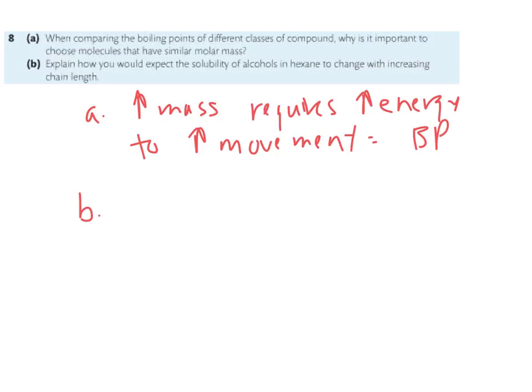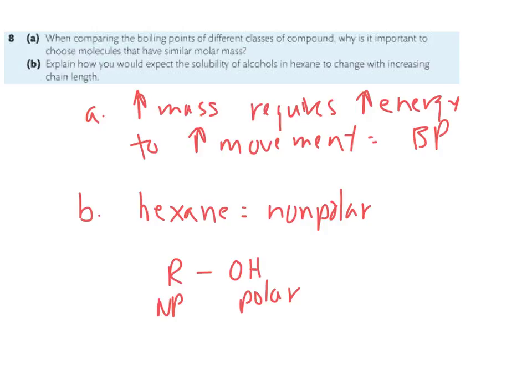B says, explain how you would expect the solubility of alcohols in hexane to change with increasing chain length. So what they expect you to realize is that hexane is nonpolar. So nonpolar substances will most readily dissolve. Well, alcohols have the nonpolar R group and then the highly polar OH group. So the shorter the R group, the more dominant the polar OH end is. So longer alcohols, we're going to see an increase solubility in hexane because you've got more this nonpolar group to set up temporary dipoles with the hexane.